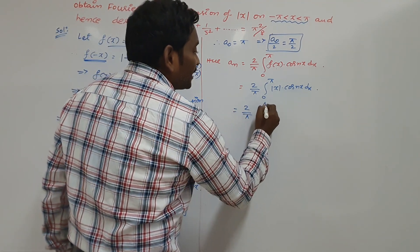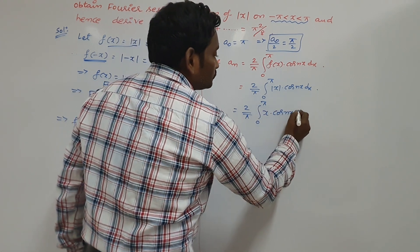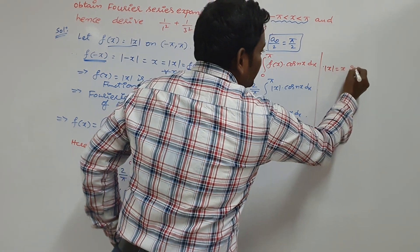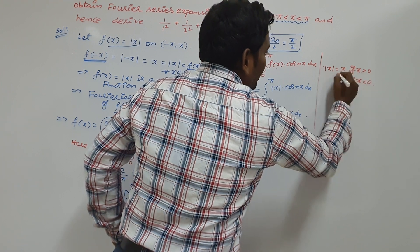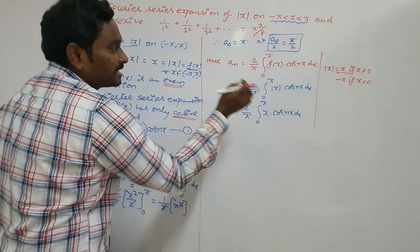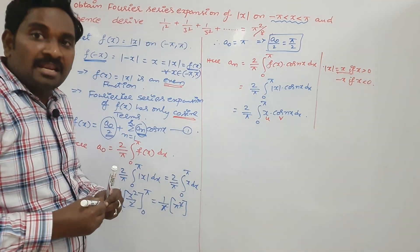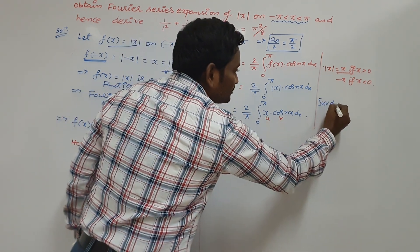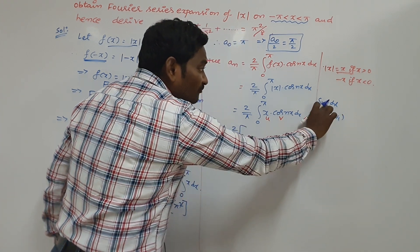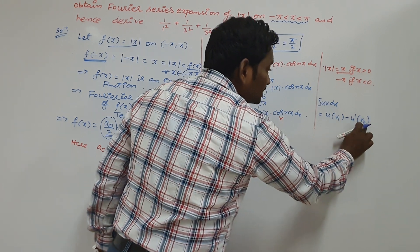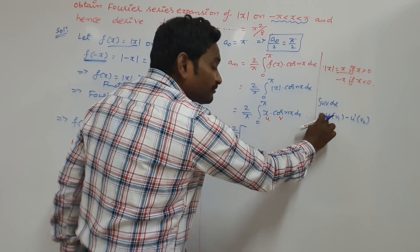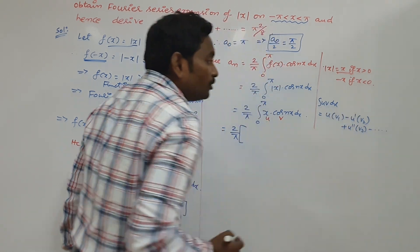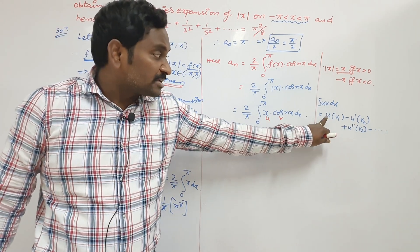So aₙ equals 2 by pi times the integral from 0 to pi of x cos nx dx. The modulus of x definition: mod x equals x if x greater than 0, and minus x if x less than 0. Now we have to apply the integration by parts formula — the integral uv rule. The formula is: u into v₁, where v₁ is the integration of v, minus u-dash into v₂, and we continue until the derivative of the first term is zero.